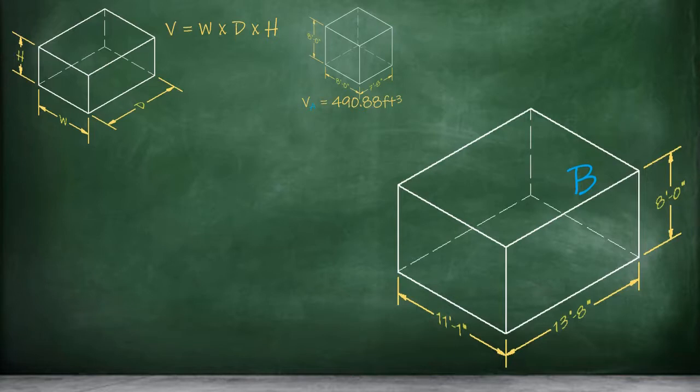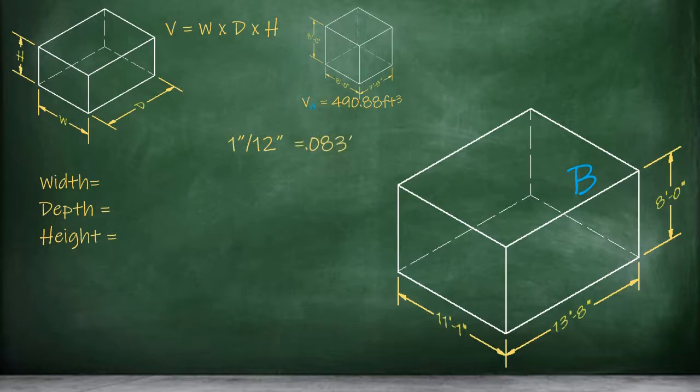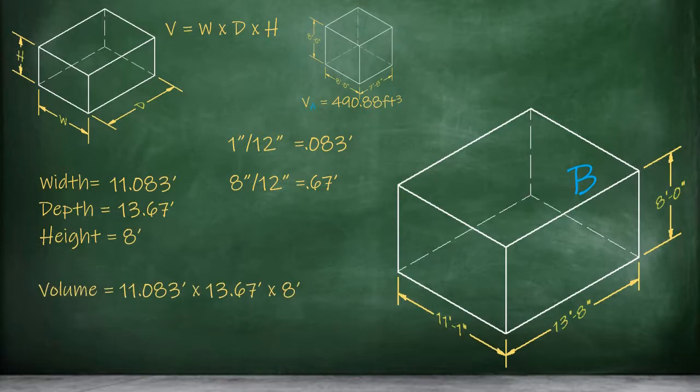Next we'll look at part B. Again, we're going to use the width, depth, and height dimensions. Our width dimension is 11 feet 1 inch, so we need to convert the 1 inch portion into decimal feet by dividing 1 by 12, which equals 0.083 feet. When we add this back together with our 11 whole feet, we get a width dimension of 11.083 feet. Our depth dimension is 13 feet 8 inches, so once again we'll need to convert this into decimal feet. 8 inches divided by 12 inches equals 0.67 feet. When we add this back together with the whole feet, we get a depth dimension of 13.67 feet. And our height dimension is still 8 feet exactly, so no need to convert anything there. 11.083 feet times 13.67 feet times 8 feet equals a volume of 1212.04 cubic feet for part B of our space.